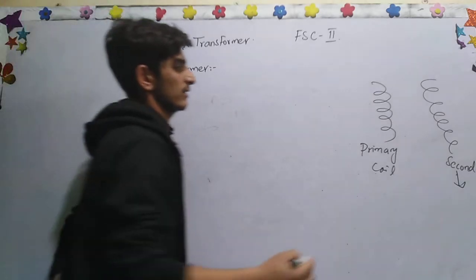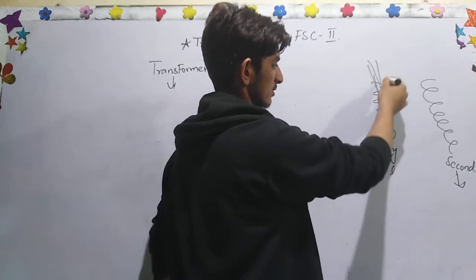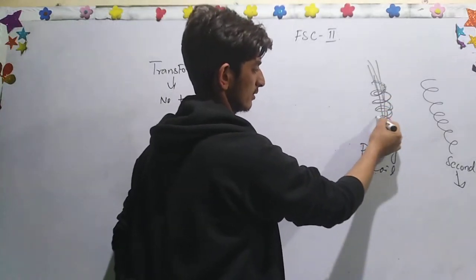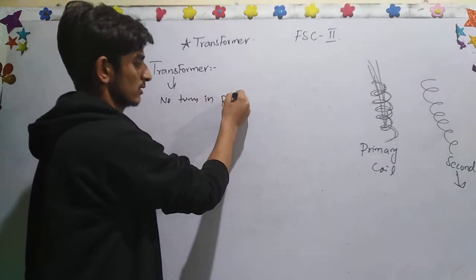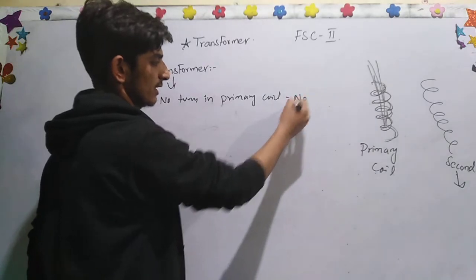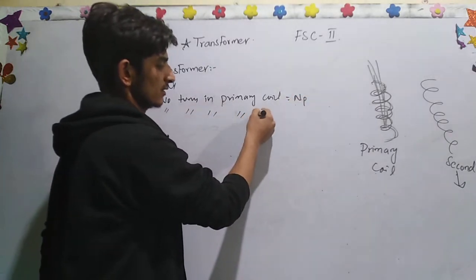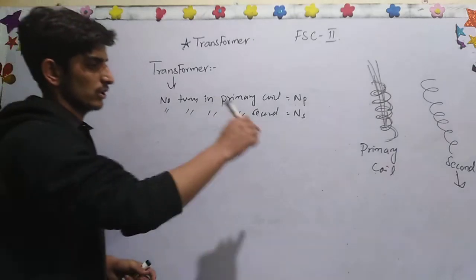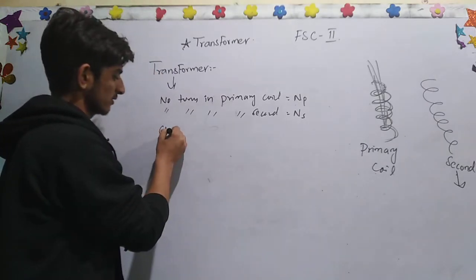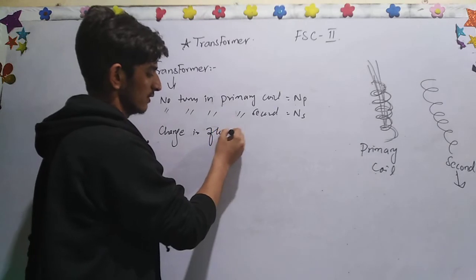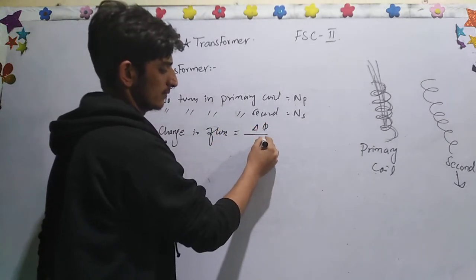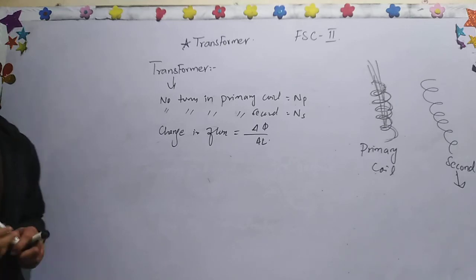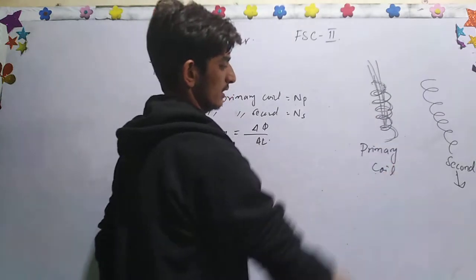First of all, look at the number of turns. The number of turns in the primary coil is represented as Np, and similarly the number of turns in the secondary coil is represented as Ns. The change in flux is represented as delta-phi over delta-t.